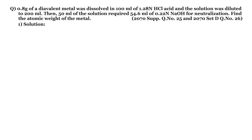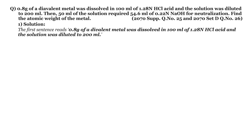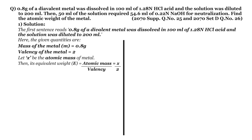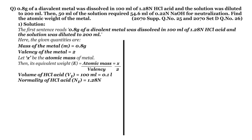Now let's solve this problem using method number one. The first sentence gives us: mass of the metal m equals 0.8 gram. Since the metal is divalent, its valency is 2. Let x be the atomic mass of the metal, then its equivalent weight E equals atomic mass divided by valency, which is x divided by 2. The volume of hydrochloric acid V1 equals 100 ml or 0.1 liter, and the normality of hydrochloric acid N1 equals 1.28 N.